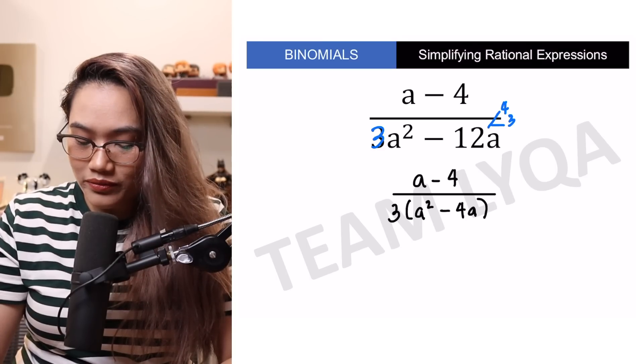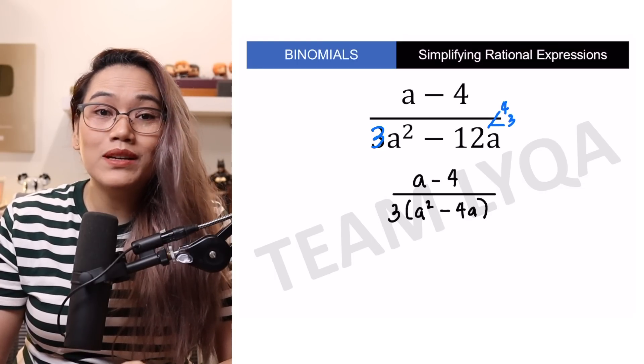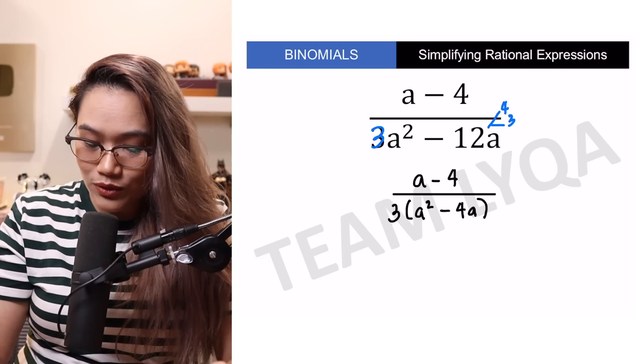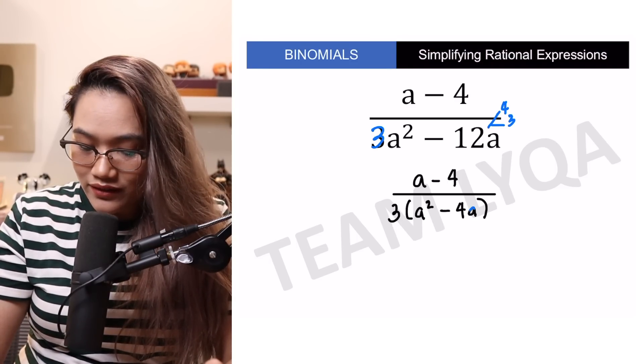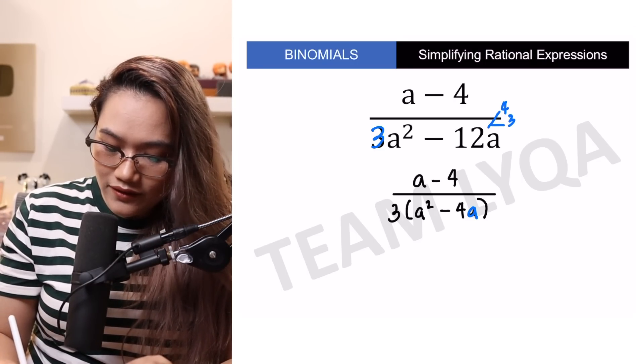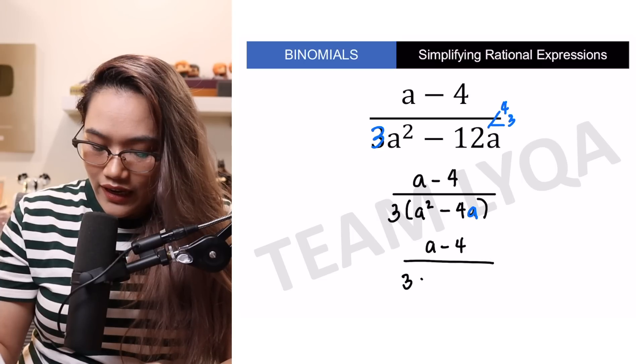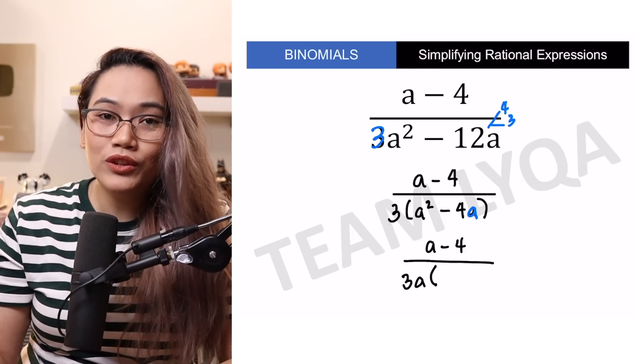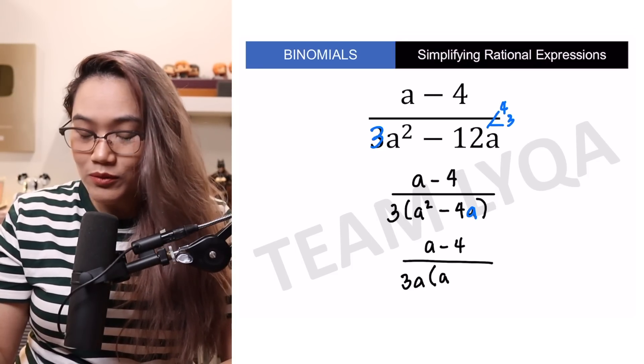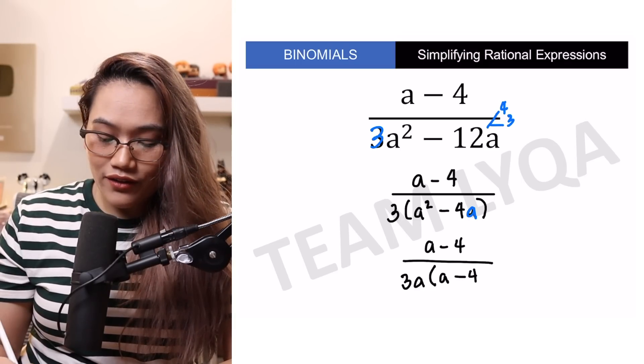Now, dito dun sa natitira sa loob, nakikita nyo, meron pa rin A dun sa left and sa right. Which means, pwede ko rin ilabas yung A. Ilang A ang pwede kong ilabas? It would just be 1 kasi isang A lang naman ang nandito sa right. So, pwede kong itong isulat as A minus 4 ulit and then you have your 3A multiplied by - Ano yung multiply ko sa A para lumabas ang A squared? That would be A. Ano yung multiply ko sa negative 4A para lumabas yung negative 4A? That would be minus 4. And now, you have this.